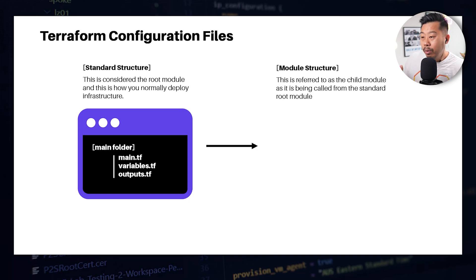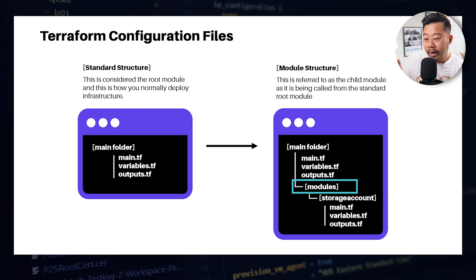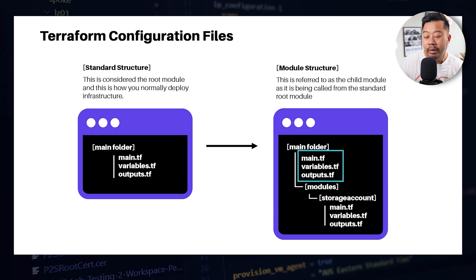If we break down what a module structure looks like, what we need to do is generalize our standard configuration and provide inputs. You can see I've got a modules folder, and I've generalized my deployment code and put it into a storage account folder, which I call from the root module. So I have main.tf again at the root and call the modules below — modules called from within the root module are actually called child modules.